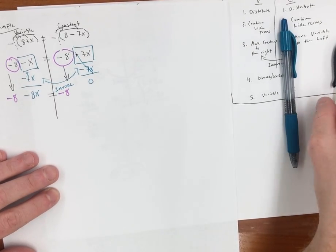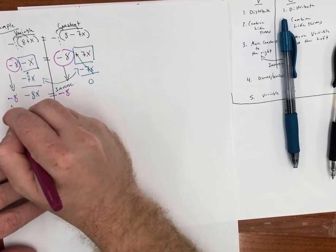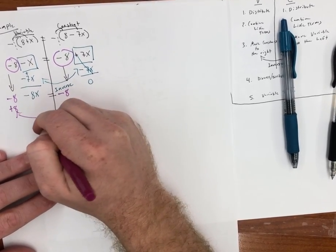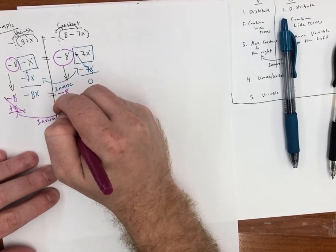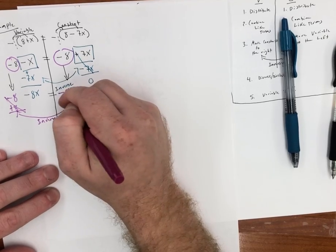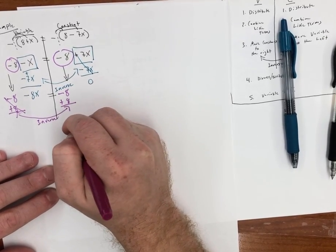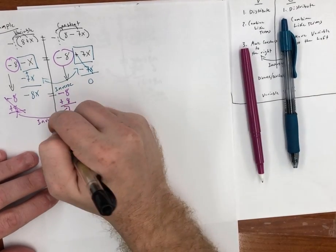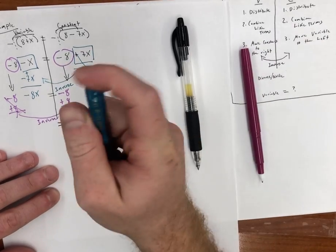So now what I have to do is combine my constants. I have negative 8, so I need to add 8 here. Remember what we do to one side, we're utilizing the inverse operation. I'm subtracting by 8, so I have to add 8 to cancel that out. What you do to one side, you do to the other. So here we are noticing that we cancel these out. This equals 0. Negative 8 plus 8 is going to give me 0, and now I just bring down my constants. We are not done here.